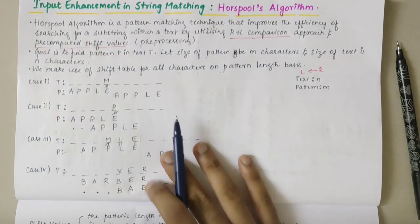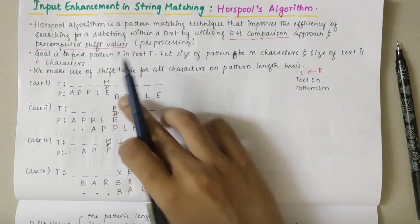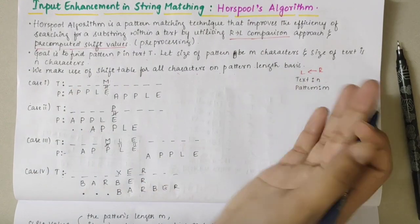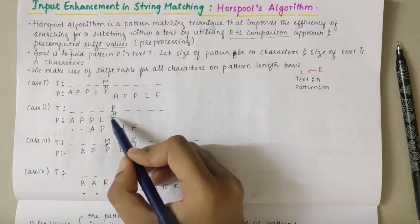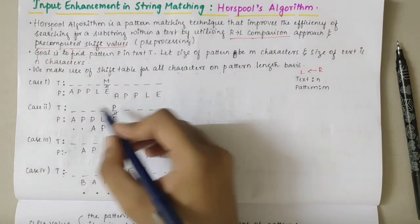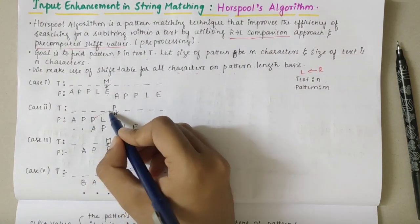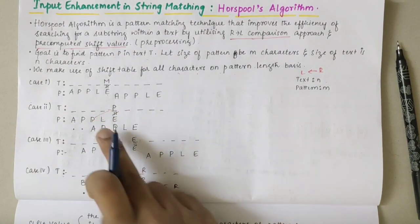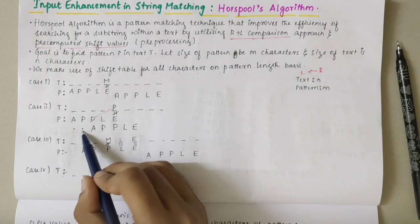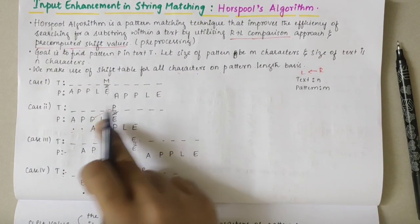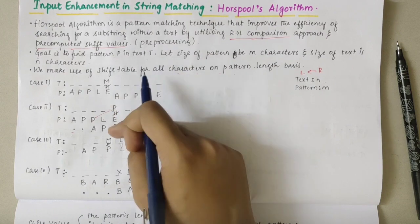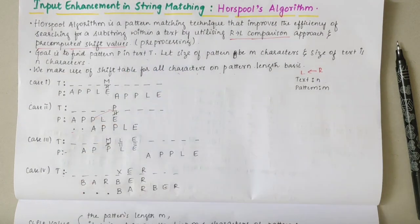If the rightmost comparison doesn't match, I check the left-hand side for the matching character. Whichever occurrence of P comes first (leftmost within LHS), that P comes first, so it shifts 2 times. After 2 shifts, the P's are aligned. That was the second case.